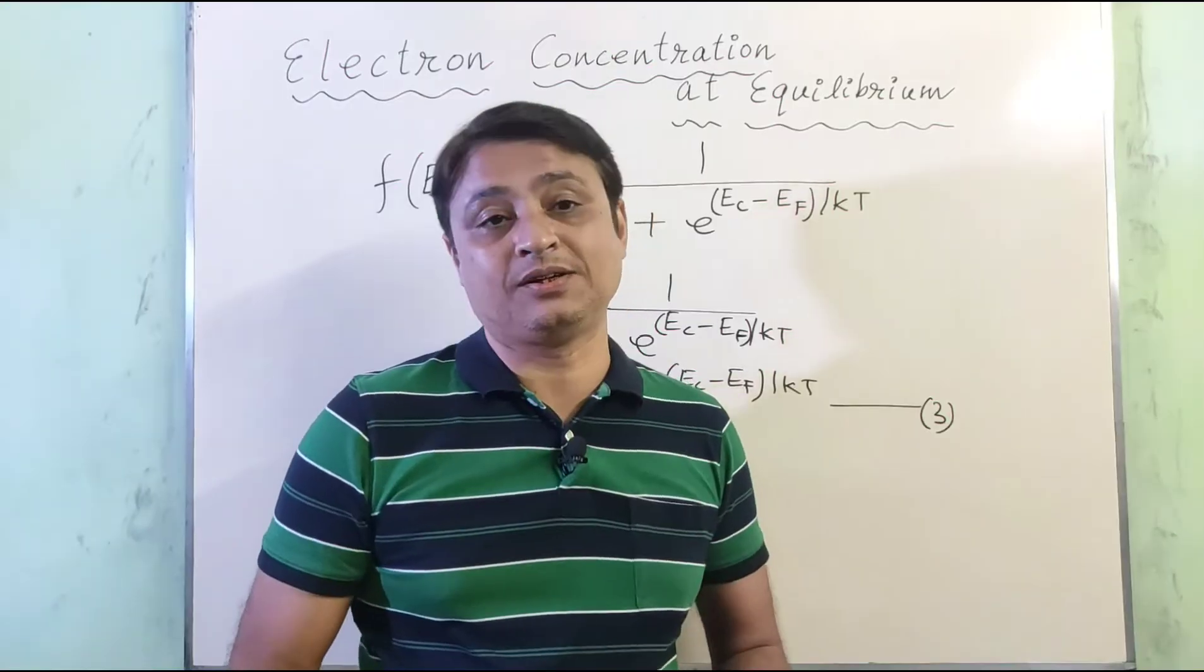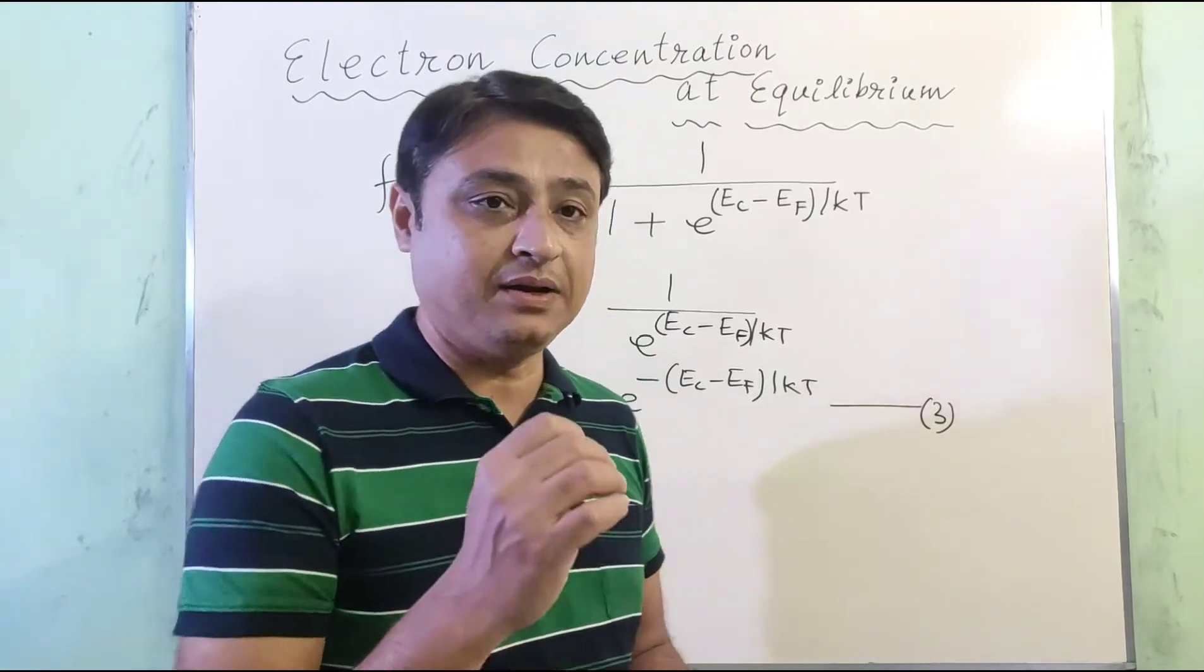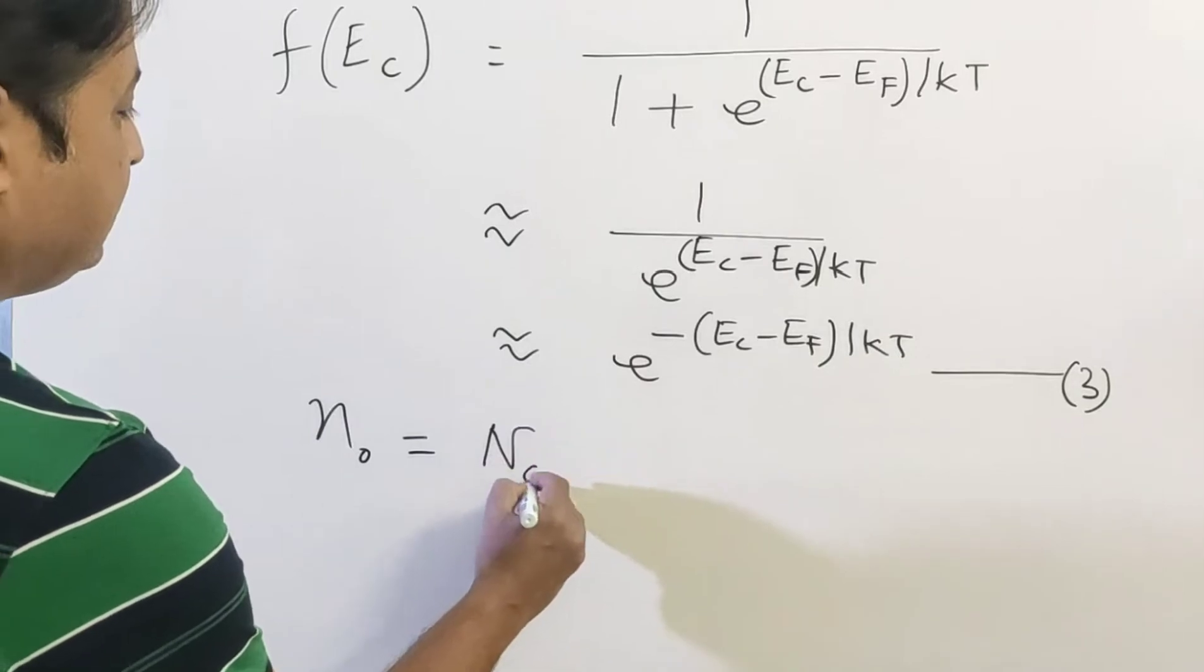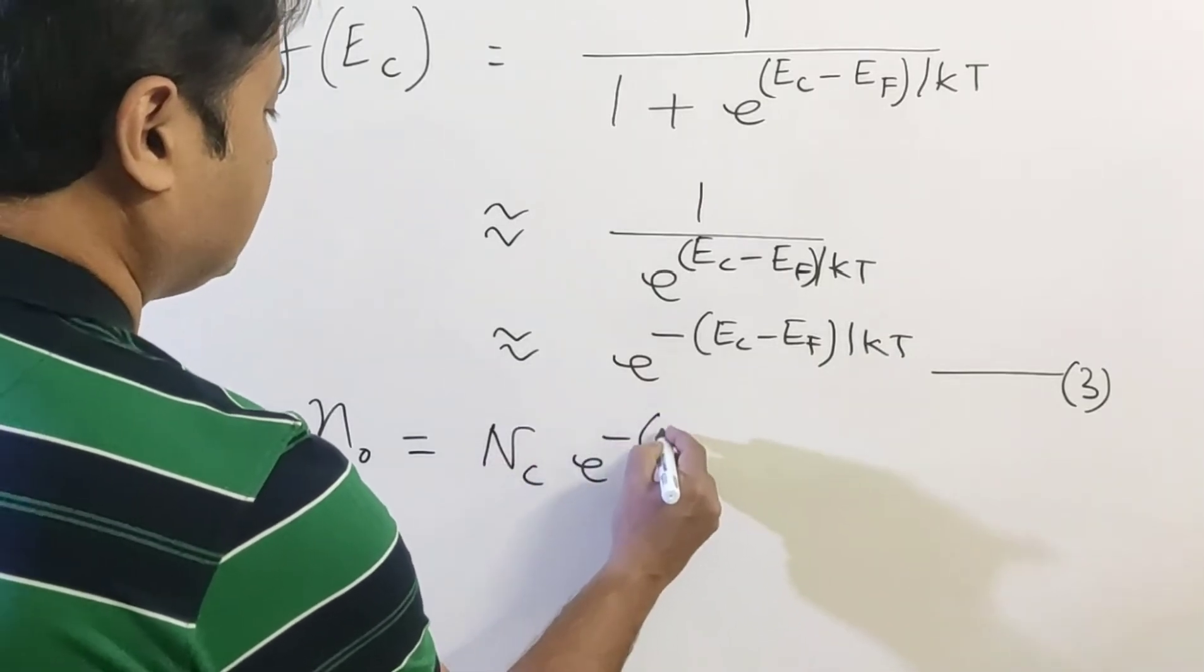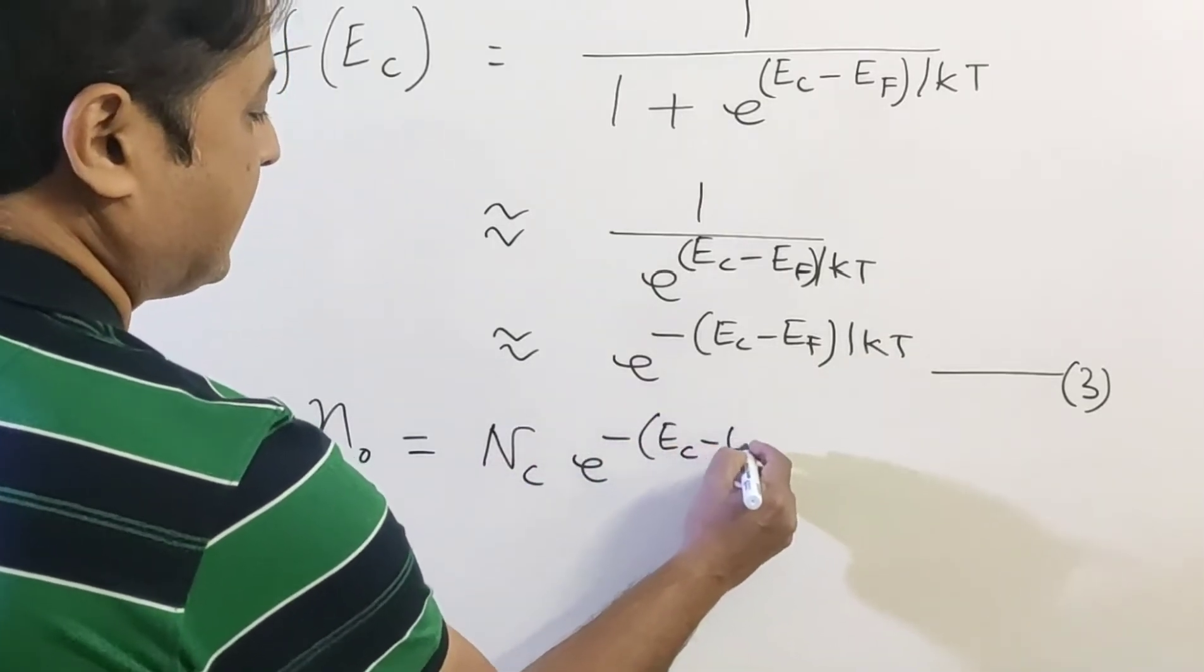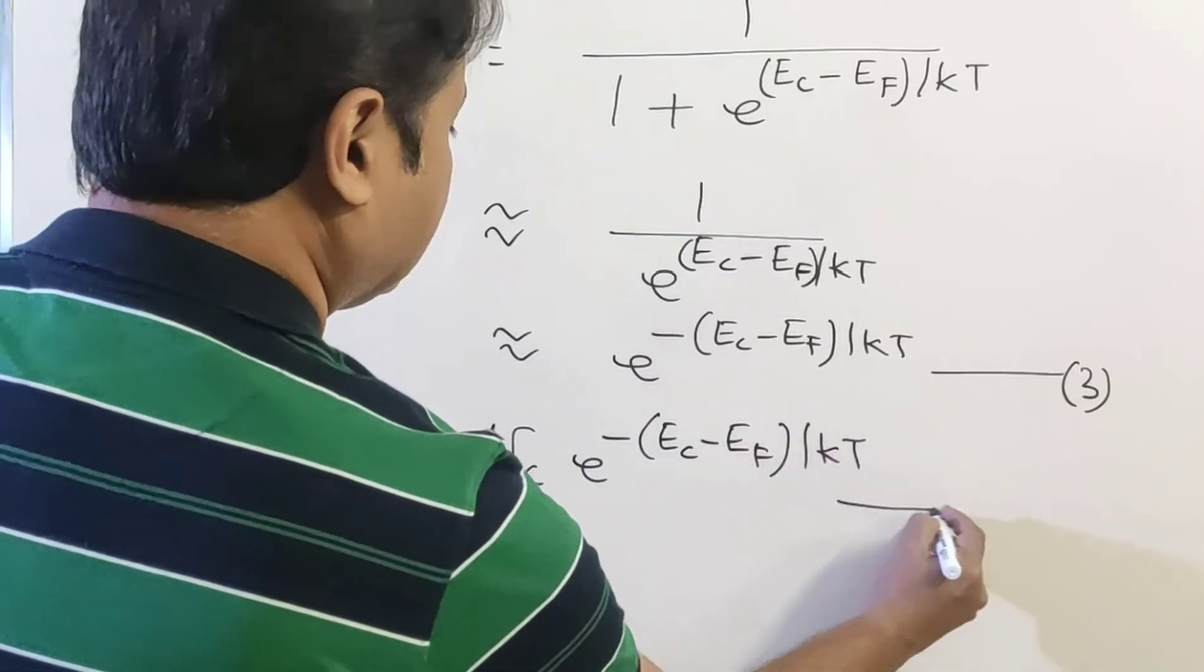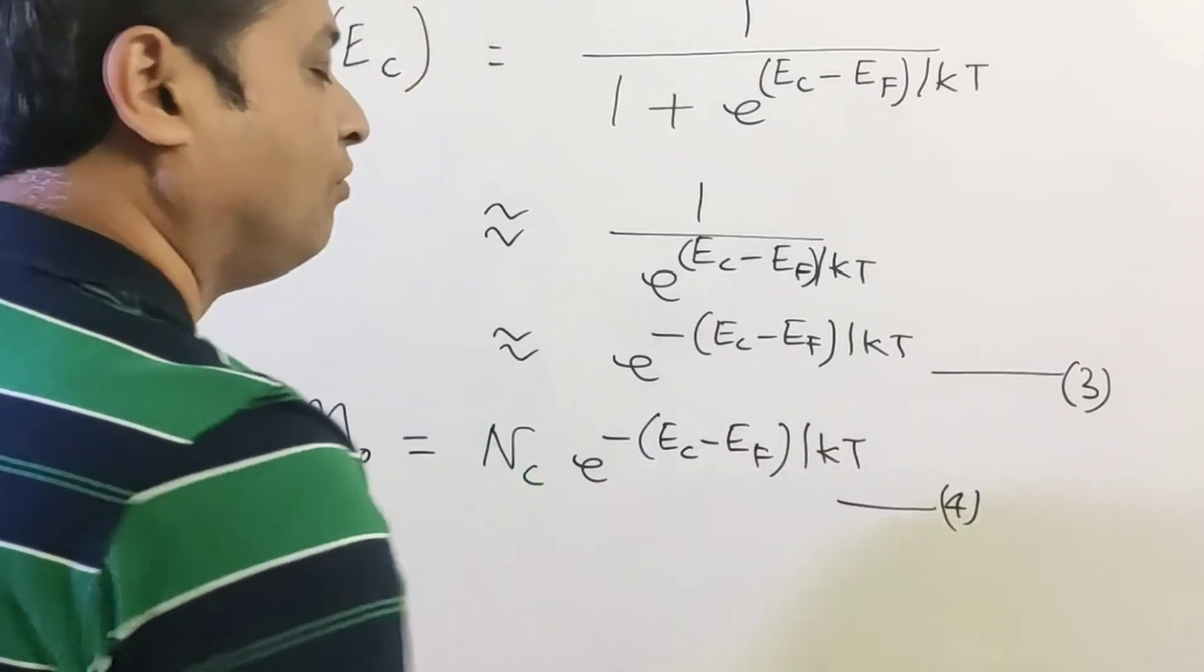The concentration of electrons in the conduction band is N₀ = Nc e^(-(Ec-Ef)/kT), equation 4.